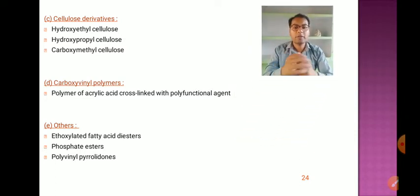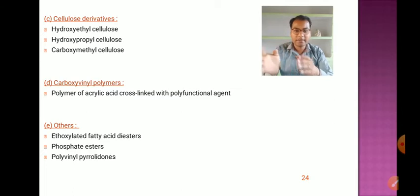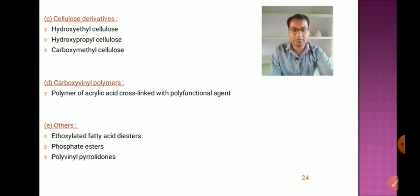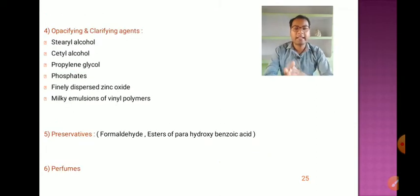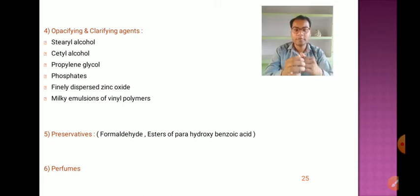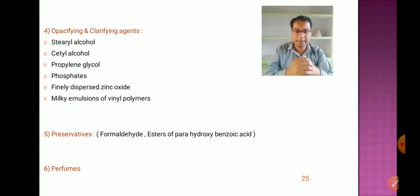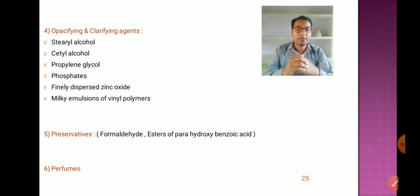Alginates and cellulose derivatives like hydroxyethyl cellulose, hydroxypropyl cellulose, and carboxymethyl cellulose are widely used in cosmetic preparations, along with carboxy vinyl polymers — polymers of acrylic acid cross-linked with polyfunctional agents. Other ingredients used include ethoxylated fatty acid diesters, phosphate esters, polyvinylpyrrolidone, and opacifying and clarifying agents like stearyl alcohol, cetyl alcohol, polypropylene glycol, phosphates, dispersed zinc oxide, and milky emulsions of vinyl polymers.